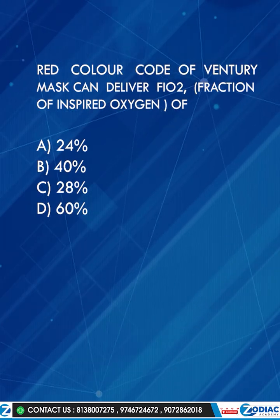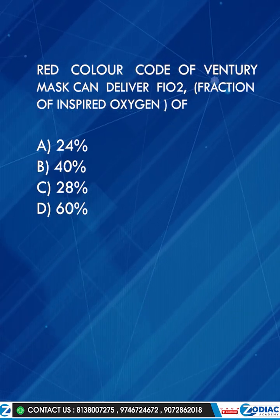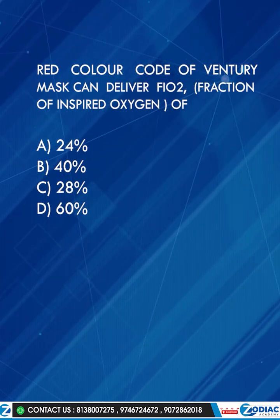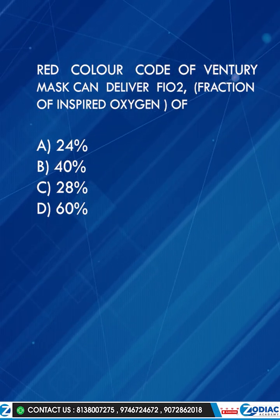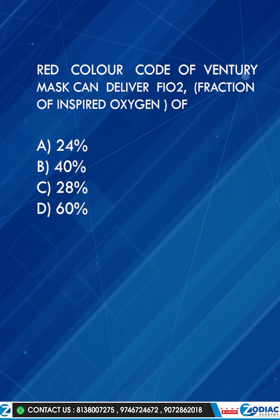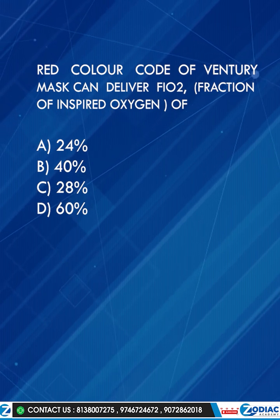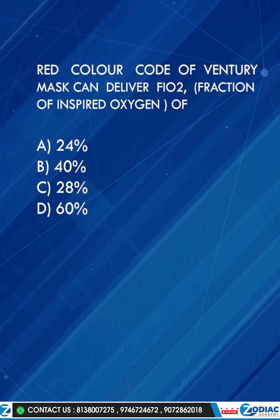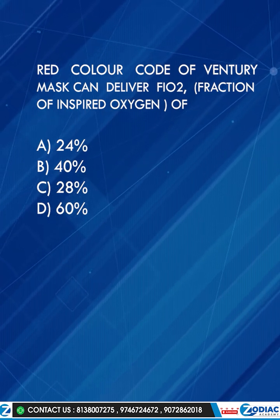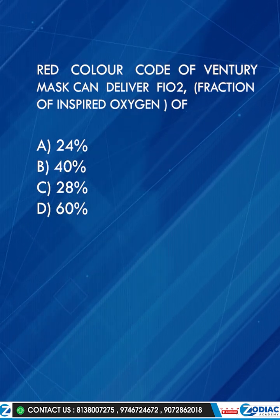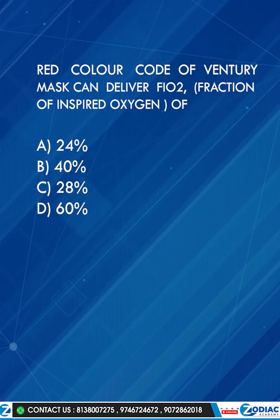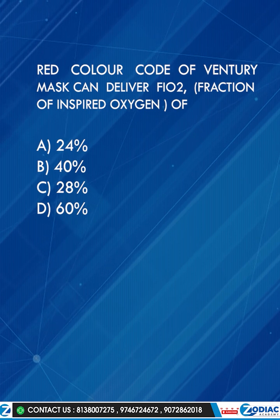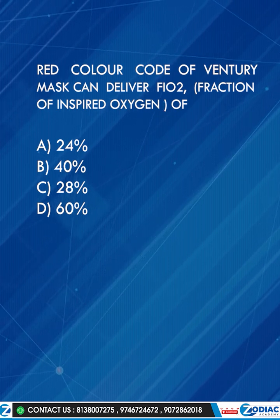Dear Students, the Red Color Code of VenturiMask can deliver FiO2. FiO2 means fraction of inspired oxygen. The FiO2 values are 24%, 40%, 28%, and 60%.